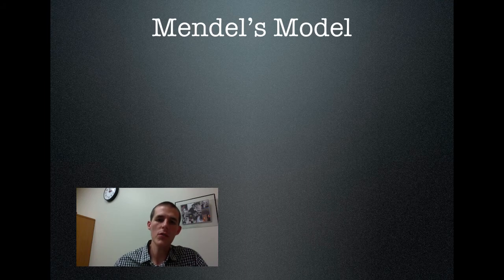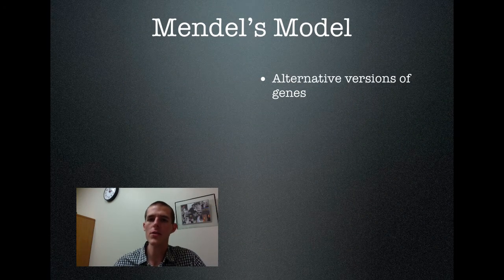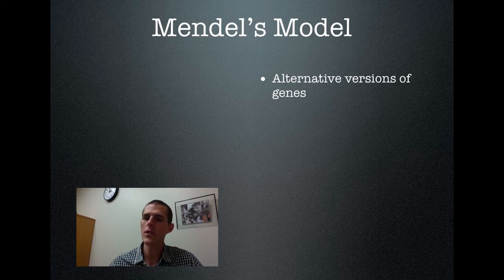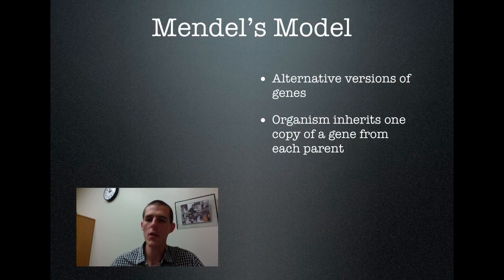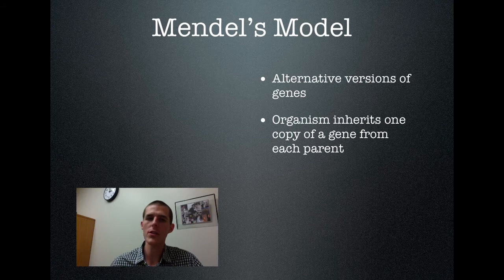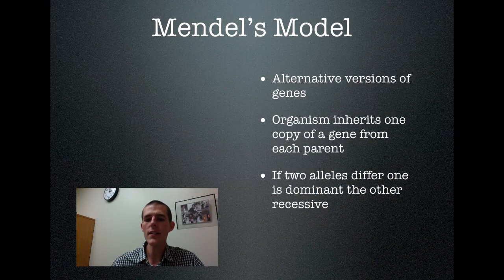After all of his work with pea plants, Mendel was able to come up with a model for inheritance that has four basic parts. First: there are alternative versions of genes, known as alleles. For a gene controlling flower color in peas, there's a purple version giving purple flowers and a white version giving white flowers — those two alternatives are alleles. Second: organisms inherit one copy of a gene from each parent. Third: if two alleles are different, one is dominant and the other is recessive.